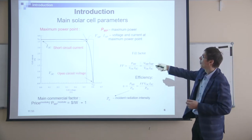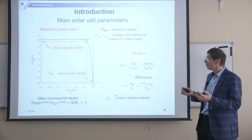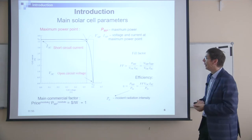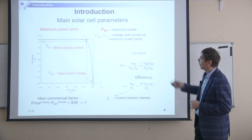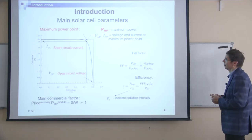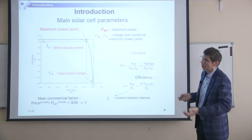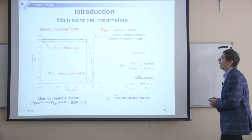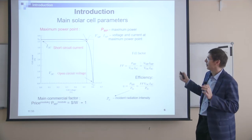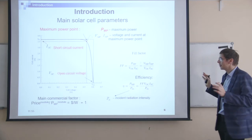This point of maximum power is actually the point of main interest for the solar cell, and our main task is to find this point. This point is described by the voltage at maximum power and the current at maximum power point.